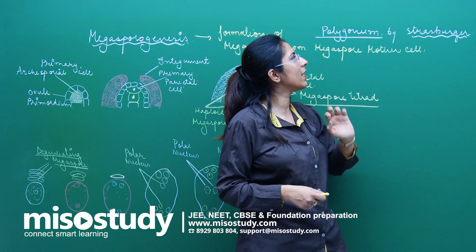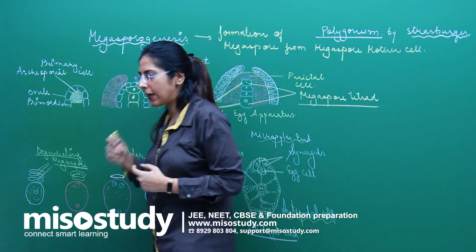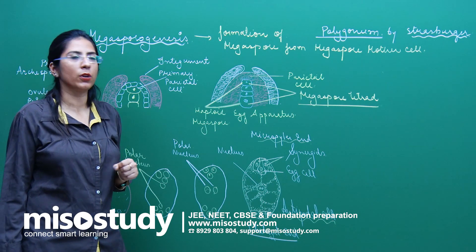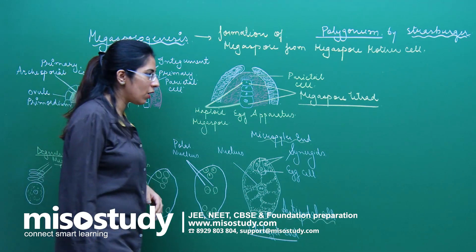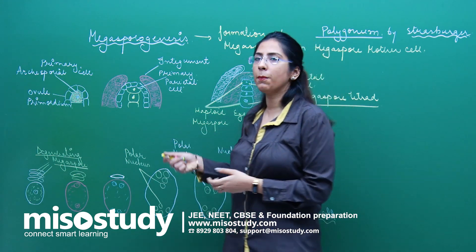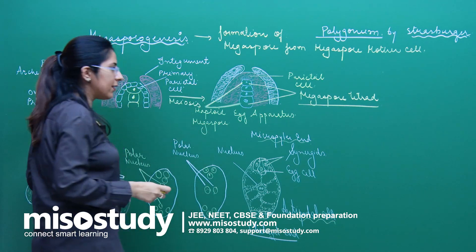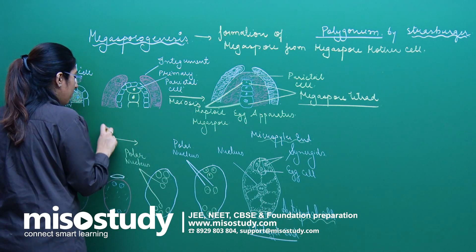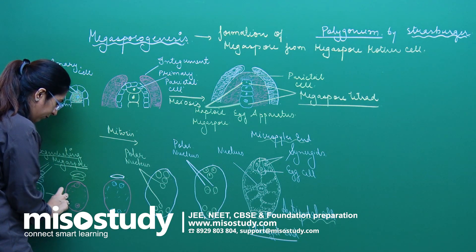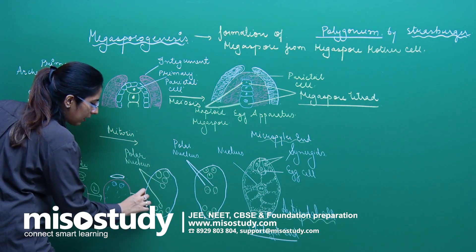Megasporogenesis was first studied in Polygonum by Strasburger. Now, why does meiosis occur here? Because we are dealing with the formation of female gametes, which must be haploid — that is the reason the Megaspore mother cell undergoes meiosis. After meiosis, the functional Megaspore undergoes mitosis. There are three rounds of mitosis total: the first mitosis, the second mitosis, and the third mitosis.